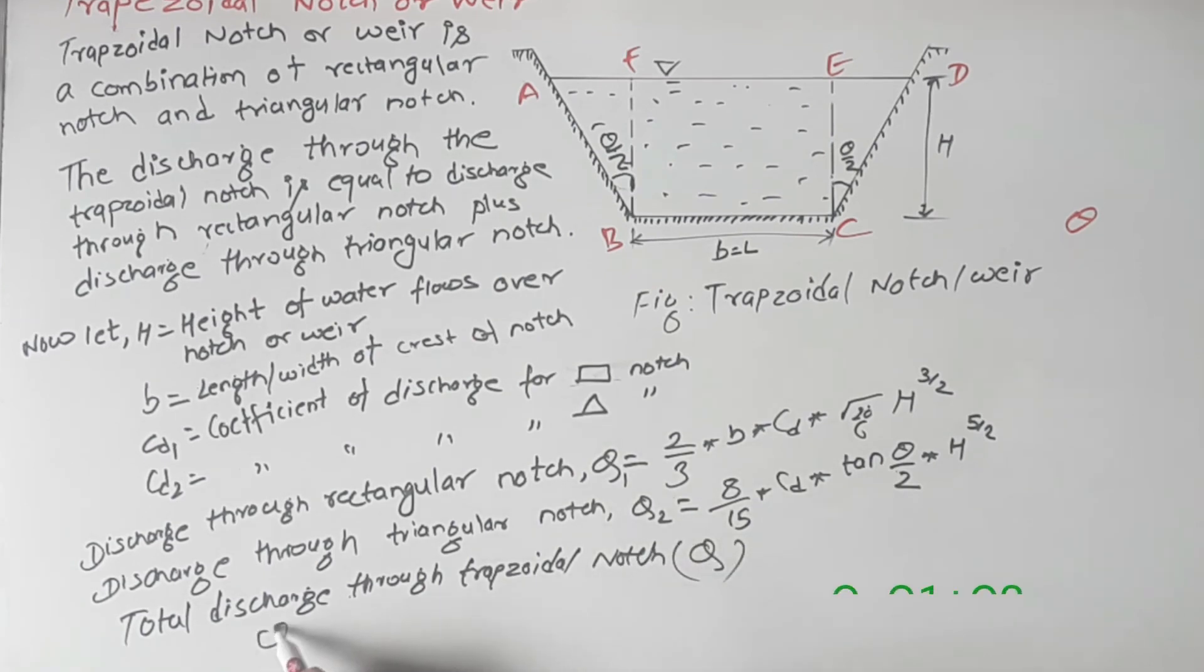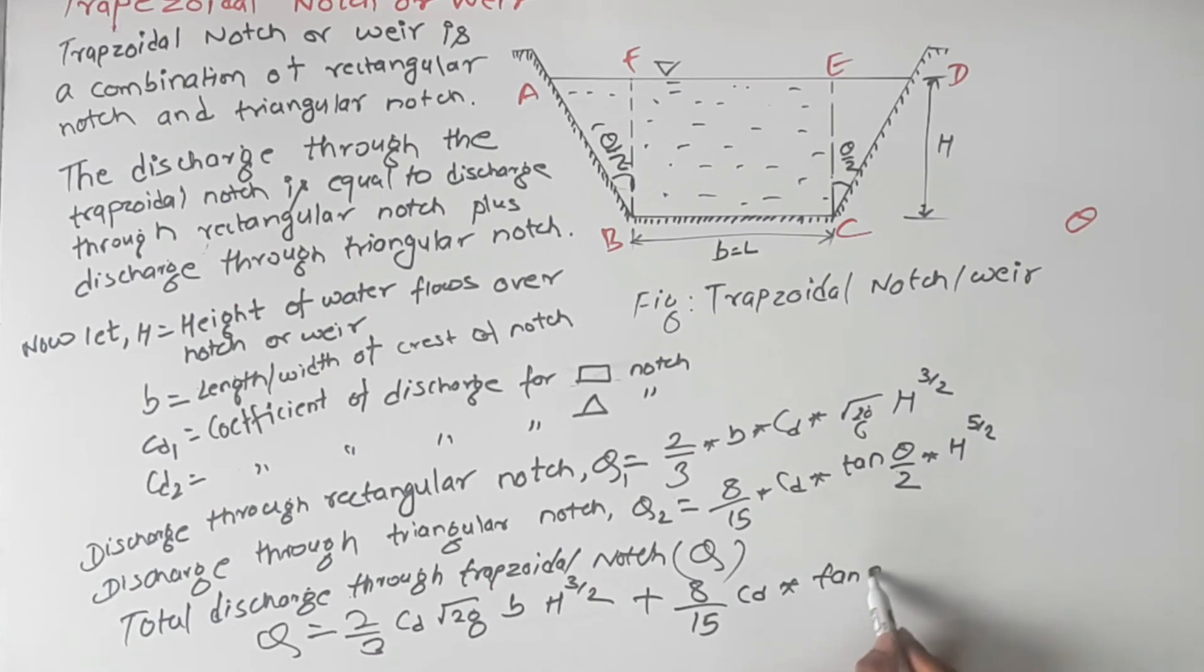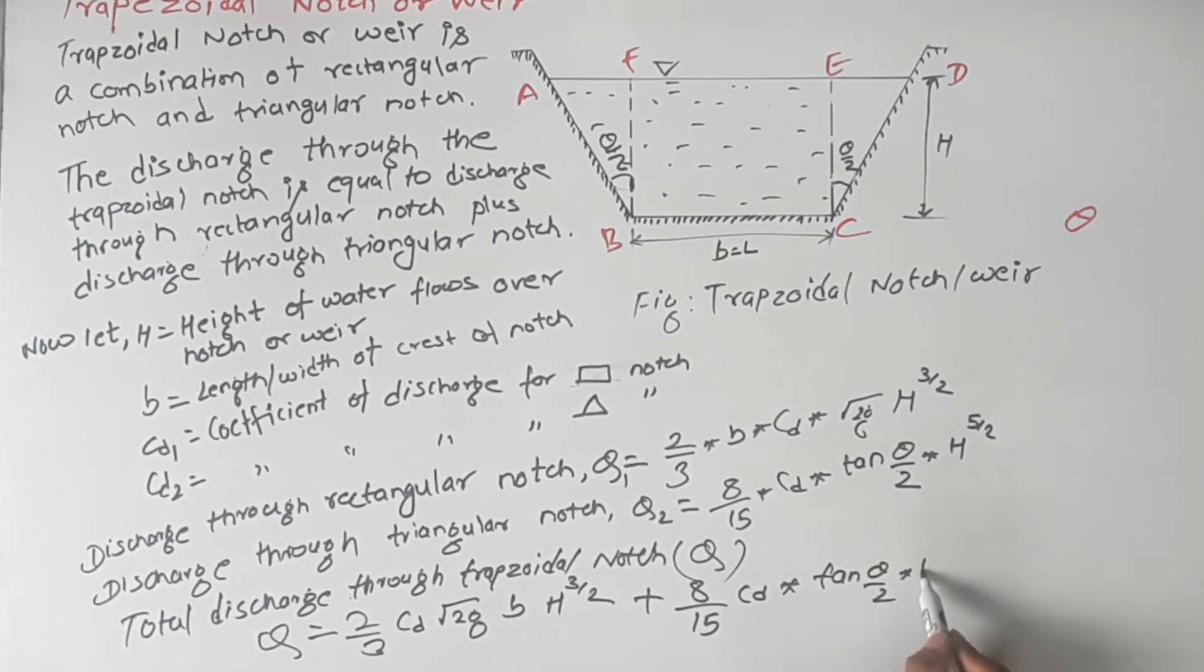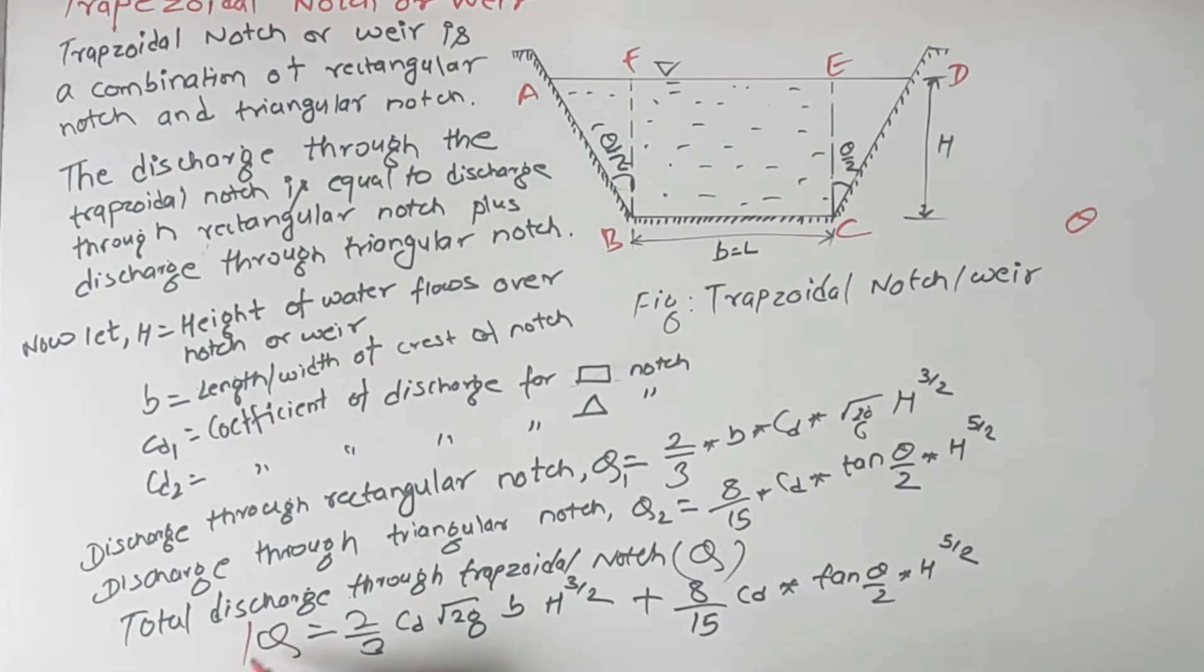So we can write Q equal to 2/3 CD1 root under 2g B h to the power 3/2, plus 8/15 into CD2 into tan theta/2 into root under 2g into h to the power 5/2. This is the total discharge through the trapezoidal notch.